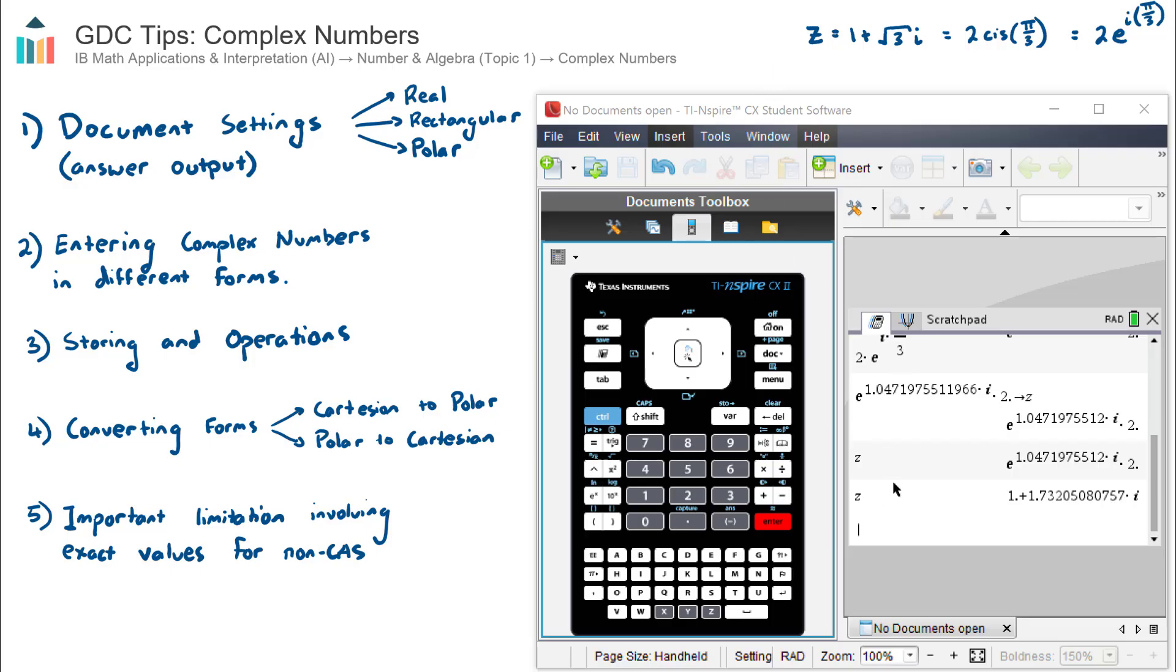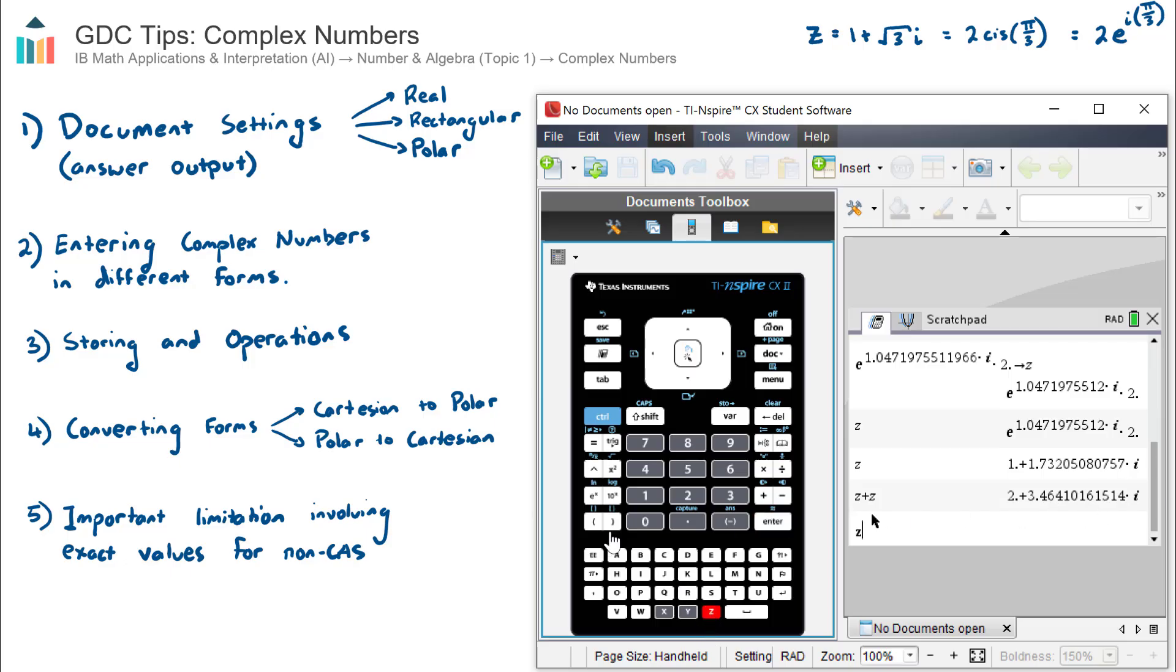So I have successfully stored my complex number zed as zed. And from there, that's actually quite useful, because I can then perform operations. So for example, zed plus zed. Now my calculator is in rectangular form, so I'm expecting a rectangular output, but probably quite messy with a whole bunch of decimals. Hit enter. And there we have it there. I could do, say, zed to the power of 3. I could do the square root of zed, et cetera, et cetera. Any operation. I mean, you don't necessarily need to store it. But if you store it, you don't need to type in your complex number every time.